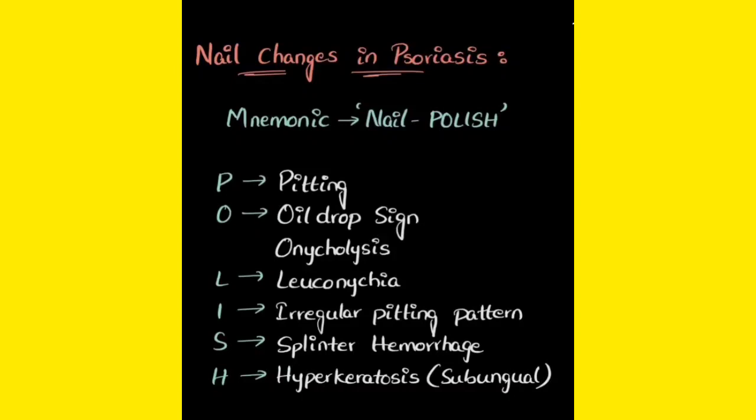L means leuconychia — leuco means white, so leuconychia means white coloration on the nail. I means irregular pitting pattern — small pits will be there on the nails in an irregular arrangement. S means splinter hemorrhage — small blood dots that you can find on the nail, that is splinter hemorrhage.